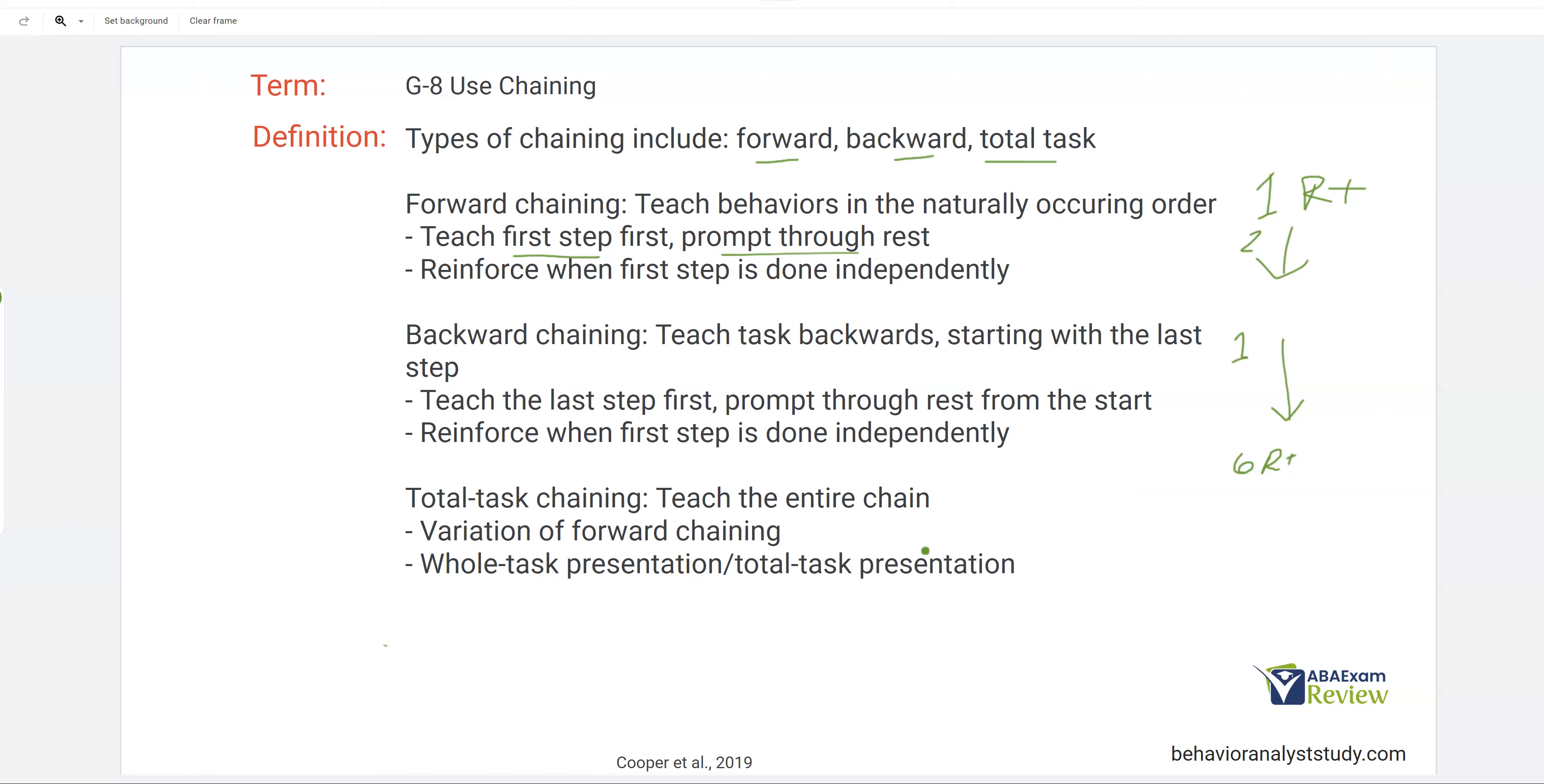And then total task chaining, which is just a variation of forward chaining, we're going to teach all the steps. So we'll teach one through six all together. Sometimes it's called whole tasks. Sometimes it's called total tasks. We're going to teach all the steps all together until the learner can do every single one in order. Total task chaining is good if you've got a quick learner, or let's say they already know most of the steps. It's just more efficient to teach everything all at once.